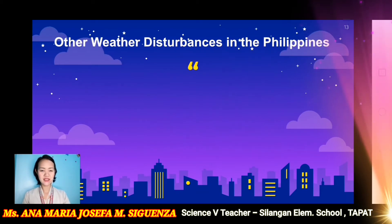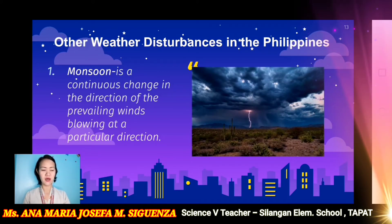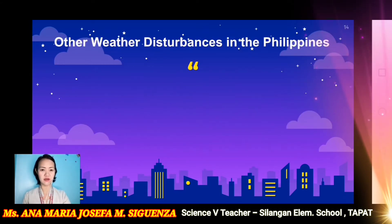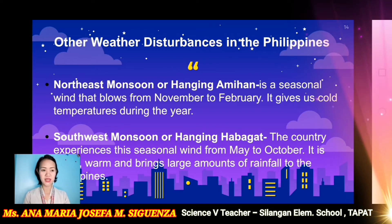Let us now proceed to the other weather disturbances that we experience in the Philippines. First is the monsoon. It is a continuous change in the direction of the prevailing winds blowing at a particular direction. When we have a monsoon, we also experience heavy rains. In the Philippines, we are experiencing two types of monsoon. We have the northeast monsoon or the hanging amihan, which is a seasonal wind that blows from November to February. It gives us cold temperature during the year, which is why during December we experience very cold weather.